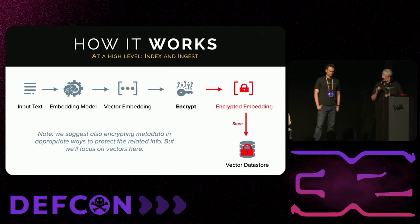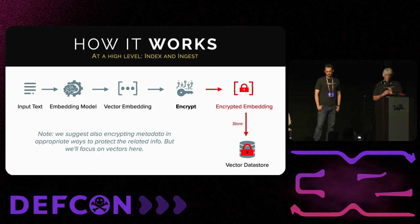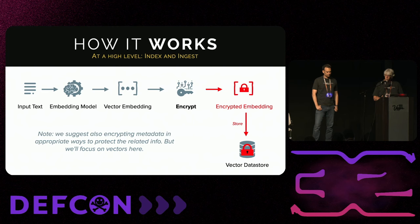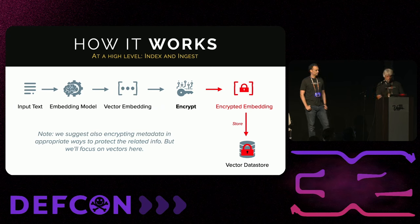The system works by adding encryption into the existing ingestion pipeline. After you've run data through the embedding model to generate a vector embedding, you run it through this algorithm to encrypt it — it's still a vector that the database will accept. You use a secret key, encrypt the vector, and throw it into the vector database. Most vector database systems also support storing metadata along with vectors, and that might contain sensitive data too, but we're just focusing on vectors for now.